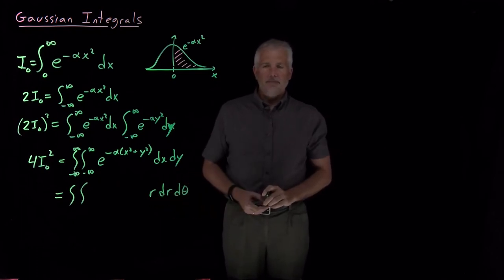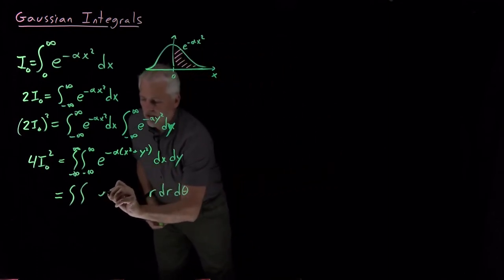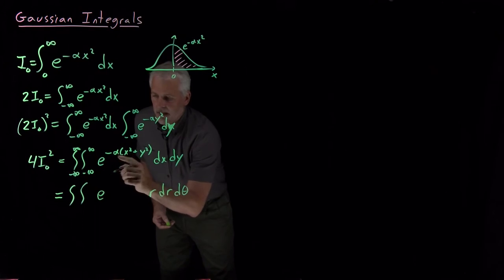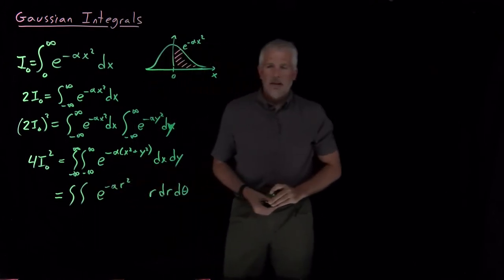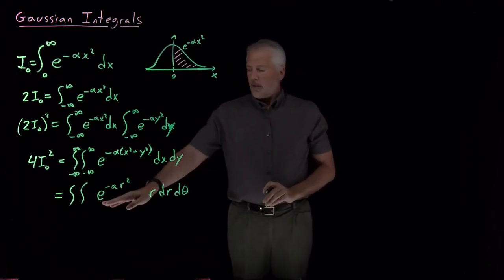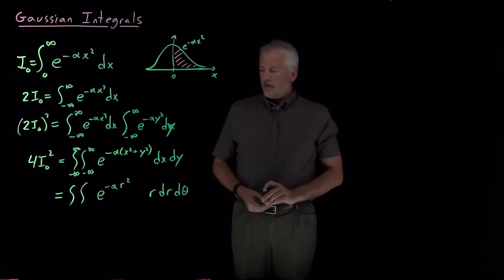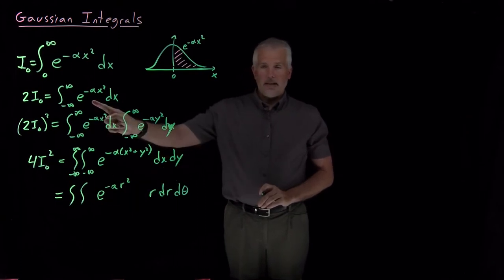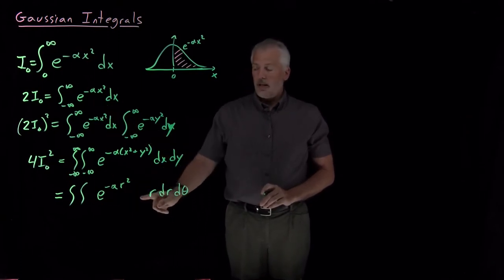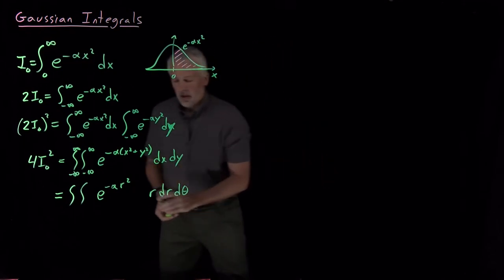Where the integral would be with respect to r dr d theta. So if I rewrite the exponent e to the minus alpha and then rewriting x squared plus y squared as r squared in polar coordinates, then I have this integral to do that looks an awful lot like the integral I started with. The difference is that now we have this extra r that comes in from the integration variable in polar coordinates.